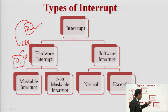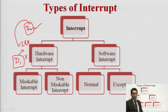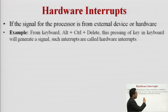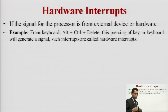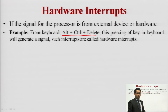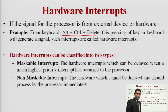Software interrupts will be discussed next, along with exceptions. In hardware interrupts, the signal is generated by an external device or hardware of the system. For example, pressing Ctrl+Alt+Delete is a hardware interrupt generated by the keyboard. Hardware interrupts are of two types: maskable and non-maskable.